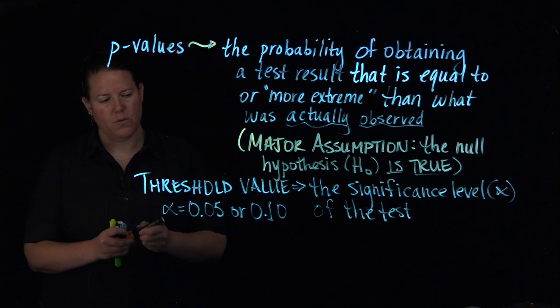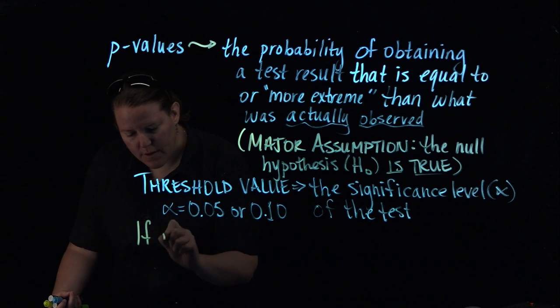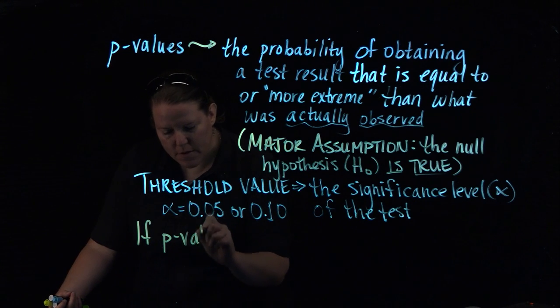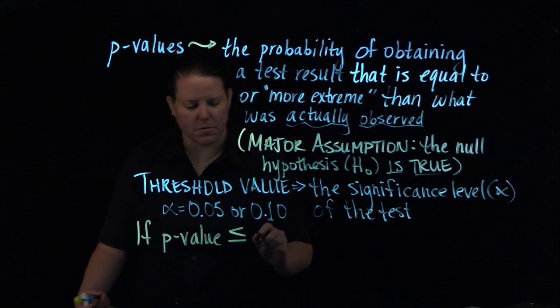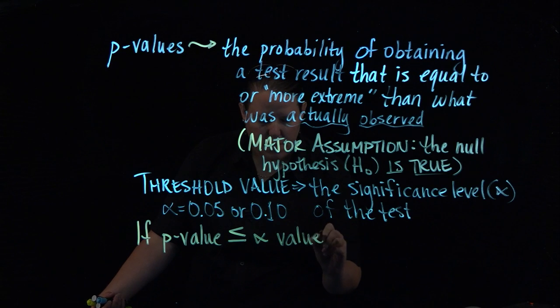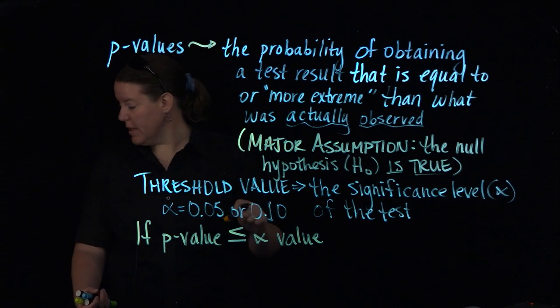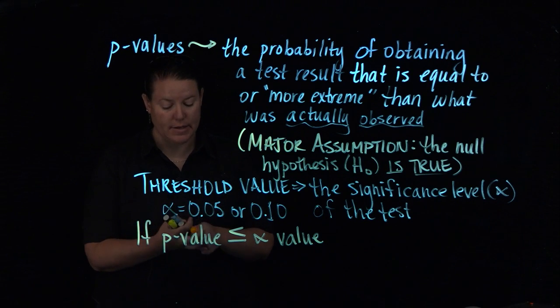So basically what the idea is here is if the p-value is less than or equal to the alpha value, the significance level of the test, then the test simply suggests,